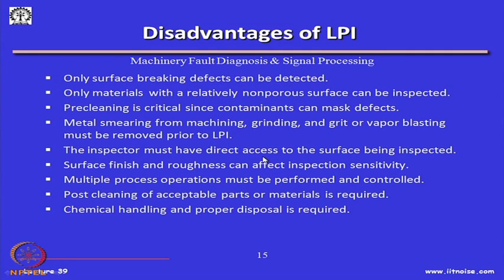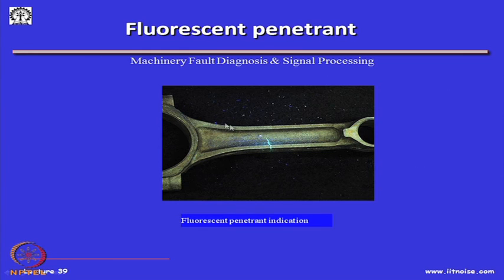Disadvantages of liquid penetrant inspection: only surface-breaking defects can be detected; only materials with a relatively non-porous surface can be inspected; pre-cleaning is critical since contaminants can mask defects; metal smearing from machining, grinding, or vapor blasting must be removed prior to LPI; the inspector must have direct access to the surface; surface finish and roughness can affect inspection sensitivity; multiple process operations must be performed and controlled; post-cleaning of acceptable parts is required; and chemical handling and proper disposal is required.